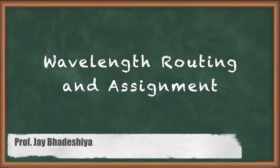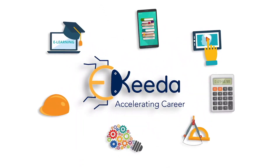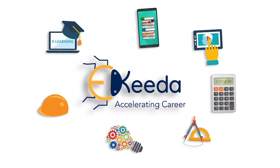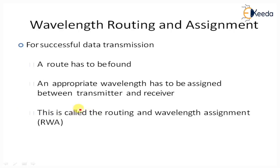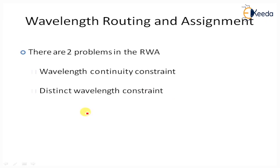Hello students, here we are going to learn about wavelength routing and assignment. For successful transmission of data, a route has to be found and an appropriate wavelength has to be assigned between a particular transmitter and receiver in the network. This is also called Routing and Wavelength Assignment, or RWA. It has two main problems.